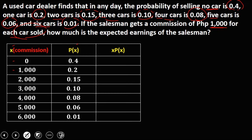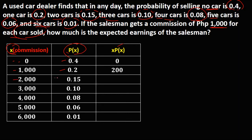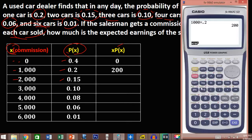To compute now for the expected value, first we need to solve this X times the P of X, so the product of X and the P of X. 0 times 0.04, this one is 0, then 1,000 times 0.2, using calculator, that's 200. Then this 2,000 times 0.15, that's 300.